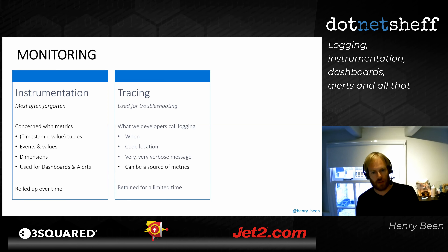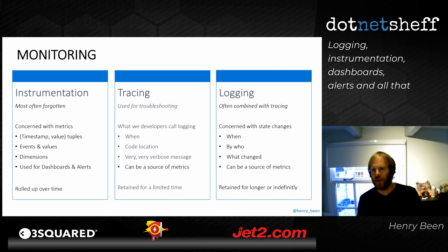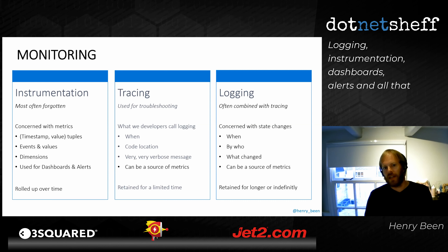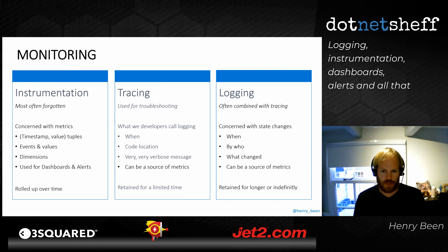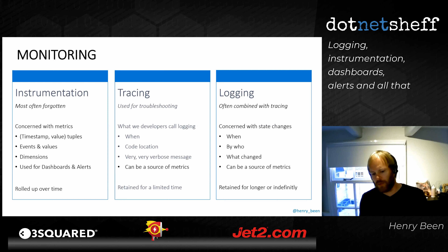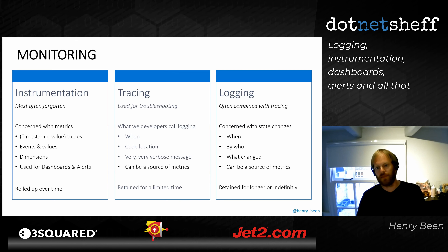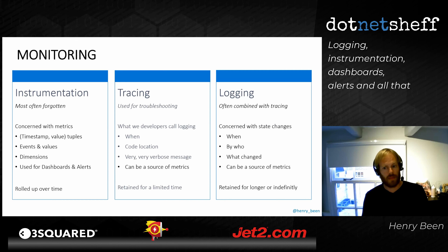Logging information can itself be a source of metrics — the number of log entries coming in is also a number. This contrasts with the final pillar, which is technically the same as tracing but is business-oriented: audit logging. It records state changes like 'Henry paid bill number 47 on June 2nd.' It's where you go to find out why 752 pizzas were delivered to your doorstep, or what a hacker did with a hijacked account. This data is often retained much longer — if you're smart, indefinitely.